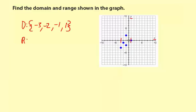Then the range, which is the outputs or the y values. The least value is negative 3. And the greatest value looks like it's a positive 2. And once again, these are just discrete points. There's nothing continuous. There's no lines.